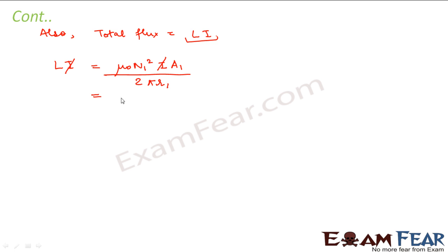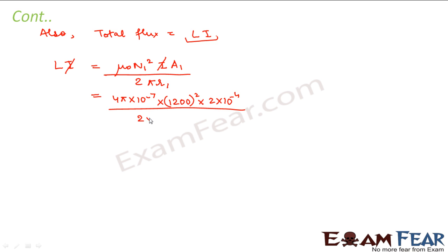This is the expression for self-inductance. Substituting values: μ₀ = 4π × 10⁻⁷, N₁ = 1200, A₁ = 2 × 10⁻⁴, and r₁ = 15 × 10⁻². This comes out to be 2.304 × 10⁻³ henry. So this would be the self-inductance of the toroid.